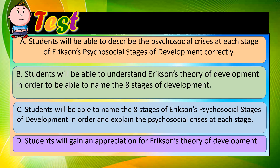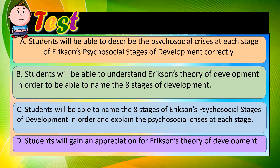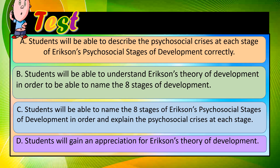Let us now check your understanding. Which of the following is the best example of a well-written learning objective? Option A: Students will be able to describe the psychosocial crisis at each stage of Erikson's psychosocial stages of development correctly. Option B: Students will be able to understand Erikson's theory of development in order to be able to name the eight stages of development.